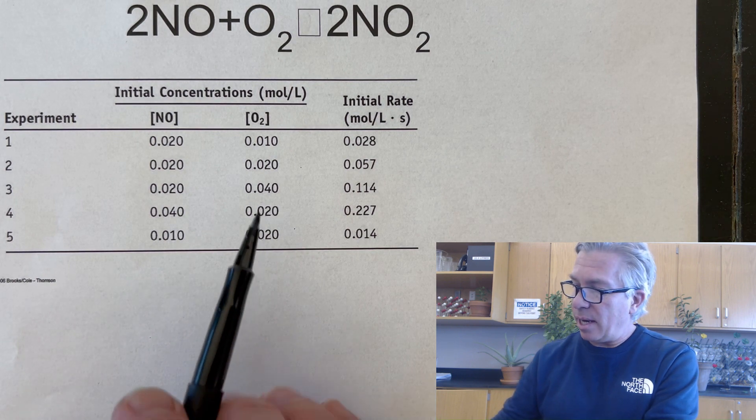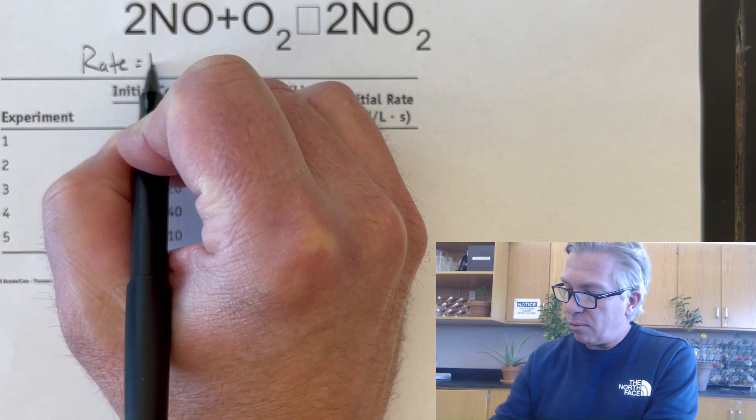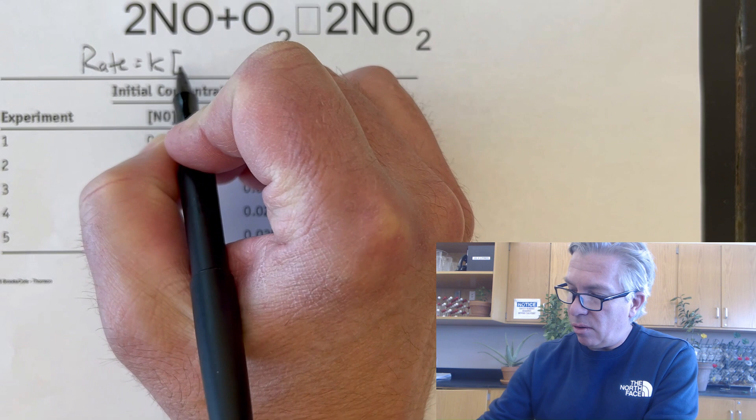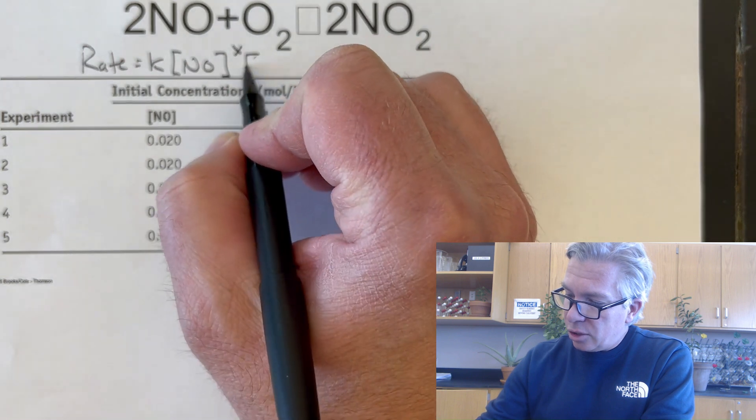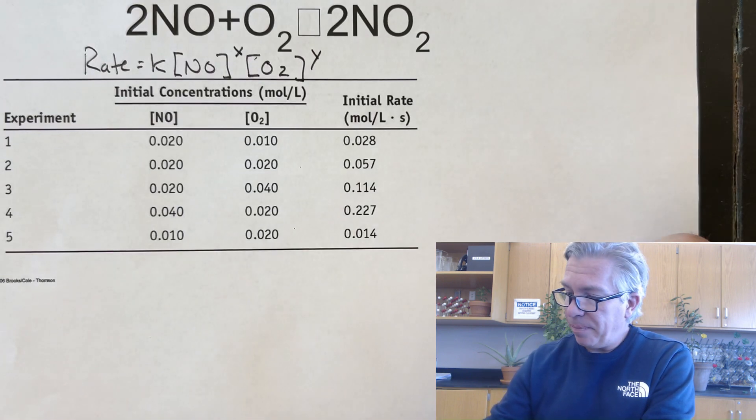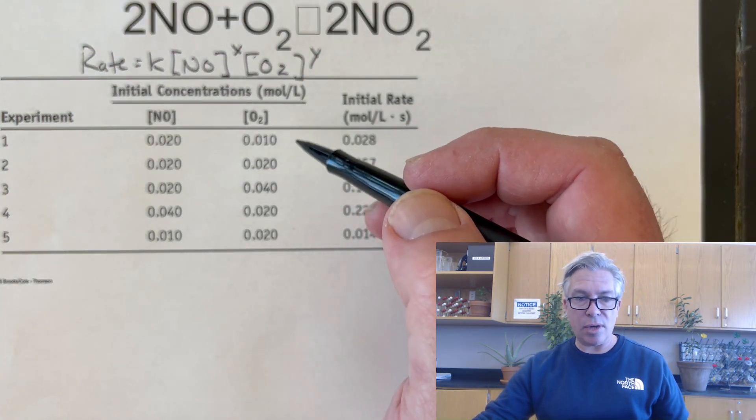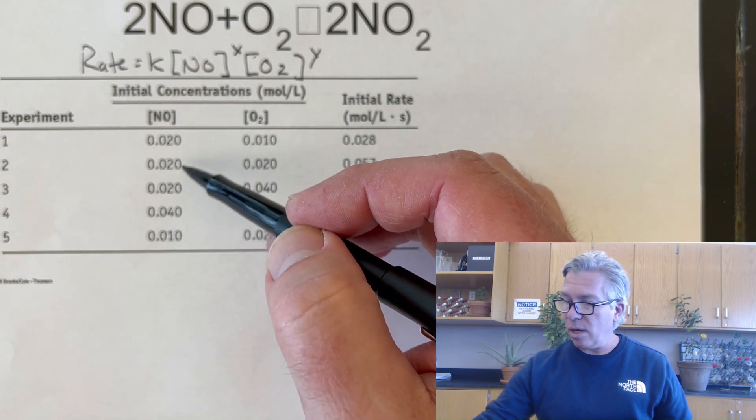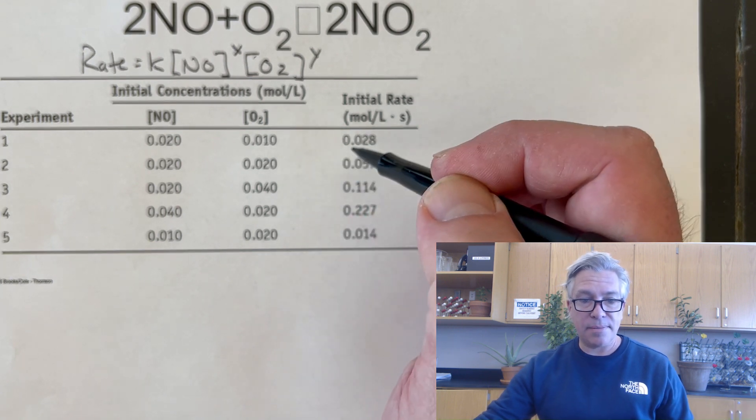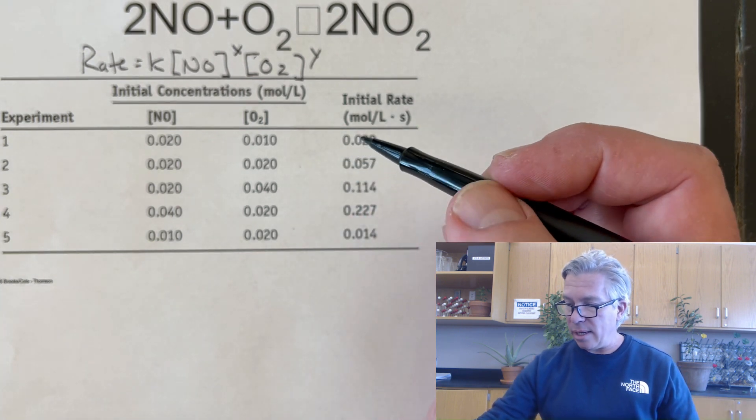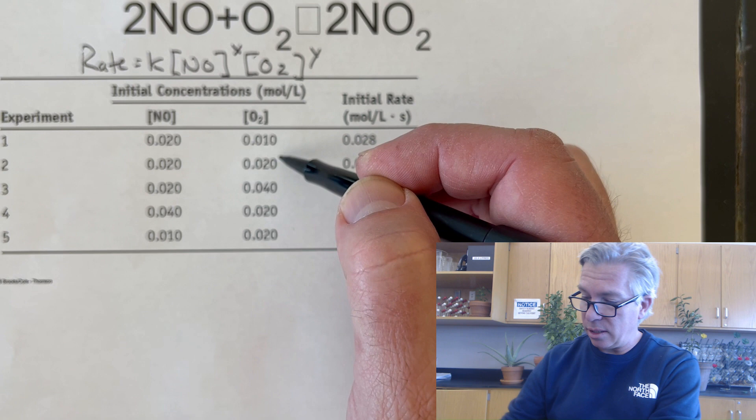We have a reaction up here, and I'm looking for the rate law: rate equals K times the concentration of NO raised to some order, and oxygen raised to another order. With this method of initial rates, you want to pick two trials where one is being held constant while one is changing, and you can see the effect of the change on the actual rate. We're going to quantify that. I'll start with trials one and two because the oxygen is changing and the rate is changing.